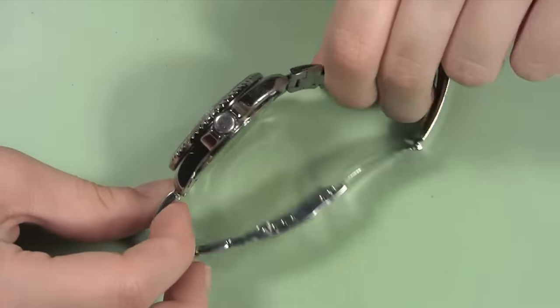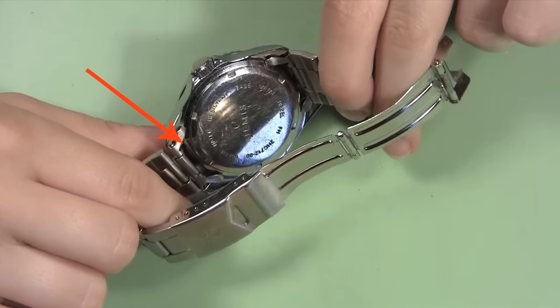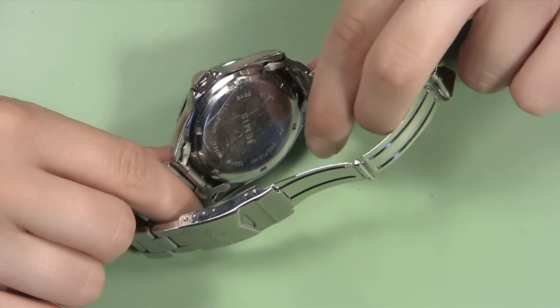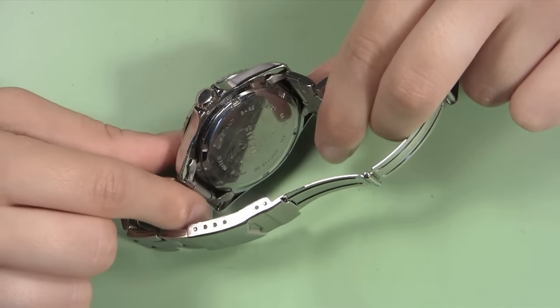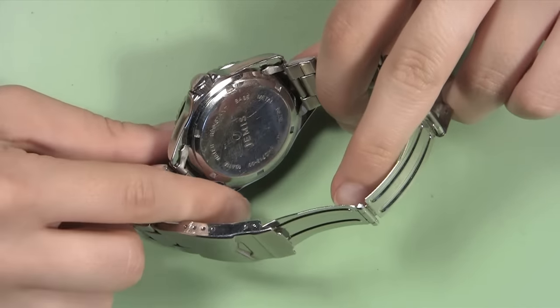Turn the watch case around so you are looking at it from the back to know for sure. From this view, you should see an extra metal piece at the end of the band that has two wings that slightly overlap on the watch lugs.